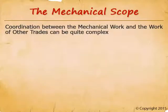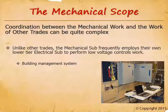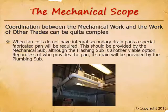The mechanical scope requires the most coordination discussion. Unlike other trades, the mechanical subcontractor frequently employs their own lower-tier electrical subcontractor for low-voltage controls work on larger commercial projects. This can include all conduit and wire for building management systems, low-voltage circuits for variable air volume boxes and fire smoke dampers, and conduit and wire for carbon monoxide monitoring systems in parking garages. When it comes to condensate, we always want primary and secondary containment.